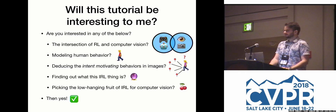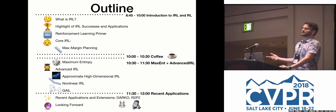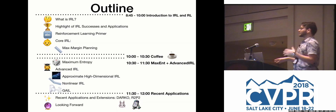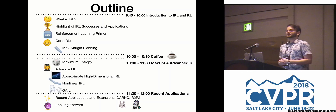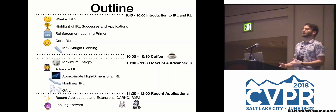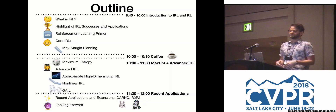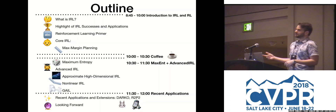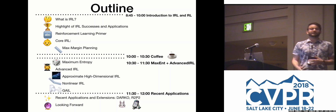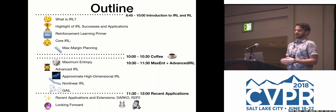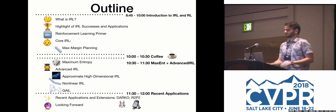We hope you will find this tutorial useful. Here's just a small outline. First, we'll try to answer at a high level what IRL is, and talk about some of its successes and applications throughout computer vision and robotics. To prime us for the notation and background of IRL, we'll give a little primer on RL. Then we'll get into the core inverse reinforcement learning approaches: max margin planning, and after the coffee break, maximum entropy IRL. Then we'll cover more recent and advanced methods, finishing with recent applications and what to look for next.